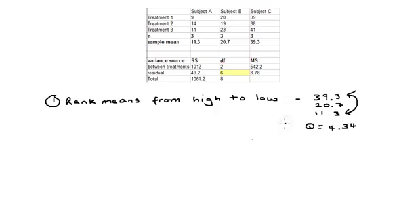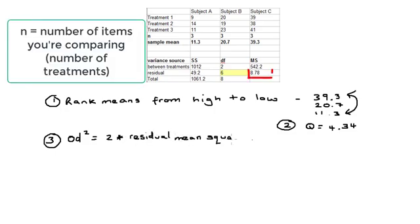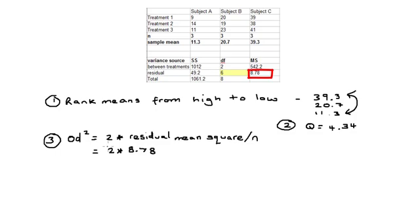The next step is to find sigma D squared. That is going to be 2 times the residual mean square divided by n. And there's our residual mean square from the ANOVA output. That gives us 5.85.